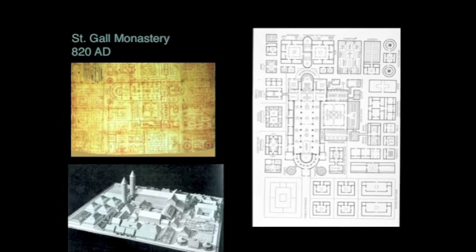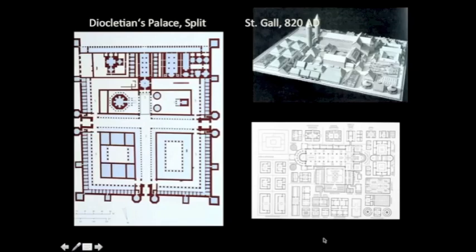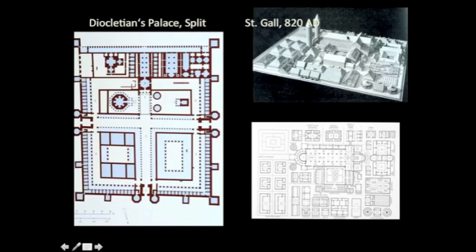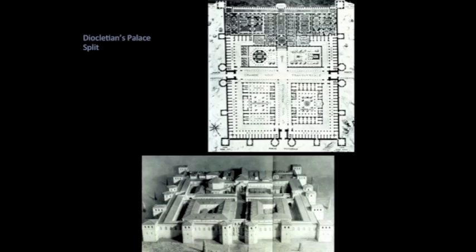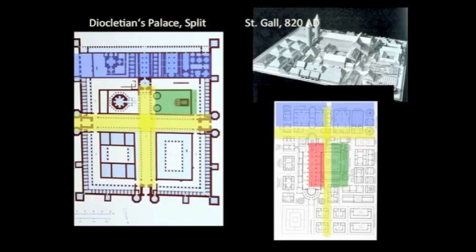Here we have a drawing — one of the oldest architectural drawings that comes down to us: a Carolingian drawing from 820 of a monastery in St. Gall, Switzerland. If you look at this plan of the monastery, it's really modeled on the Roman camp, using as its precedent Diocletian's palace — a kind of Roman camp with a gridded organization, a thick bar of program, and a courtyard in the middle. So at every moment, if there's a Roman precedent available, the Carolingians use it and then transform it in some richly loaded way.